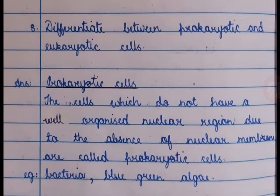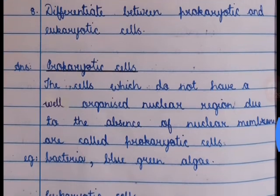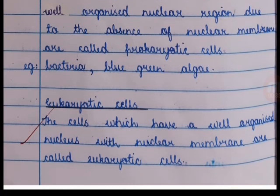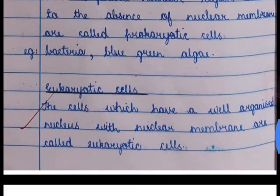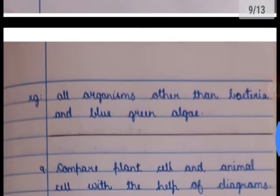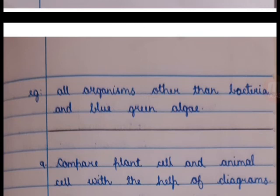Prokaryotic cells — cells which do not have a well-organized nuclear region due to the absence of nuclear membrane are called prokaryotic cells. Example: bacteria, blue-green algae. Eukaryotic cells — cells which have a well-organized nuclear membrane are called eukaryotic cells. Example: all organisms other than bacteria and blue-green algae.